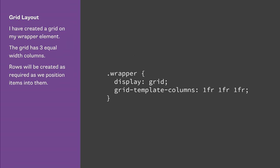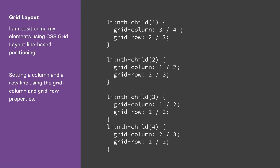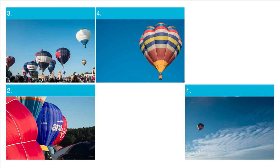Grid is even more powerful because grid lets us change the order of elements not just in one dimension but in two. I've got a parent element set to display grid, creating a three-column track layout. I'm positioning items here with CSS grid layout's grid-column and grid-row properties. The value before the forward slash is the start line, and afterwards is the end line. The only constraint is that items we want to position on our grid have to be a direct child of the element we've declared grid on.